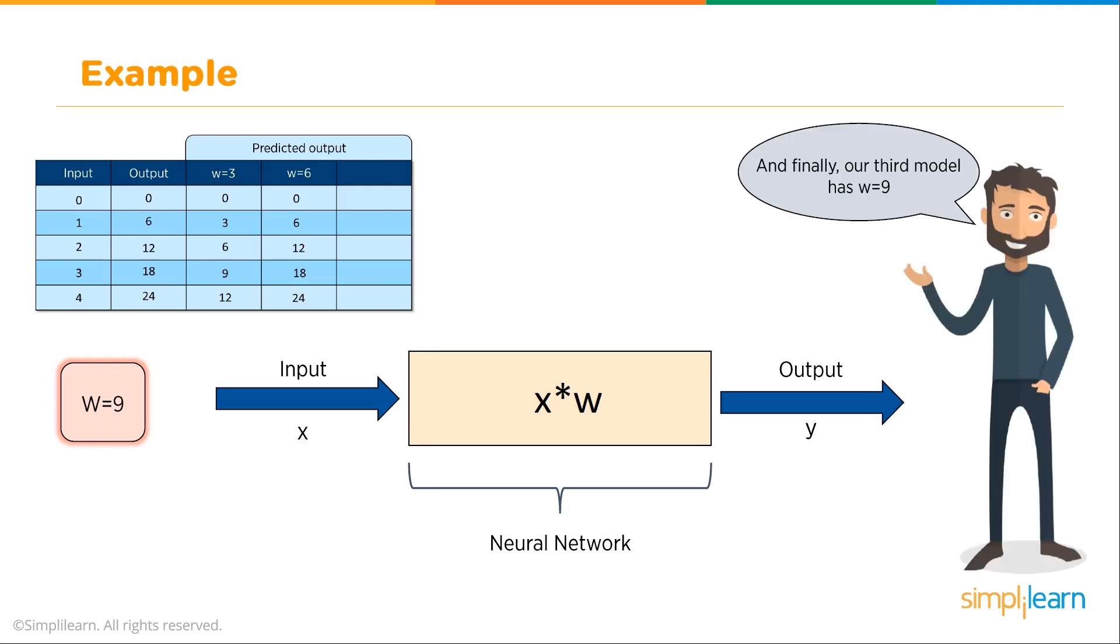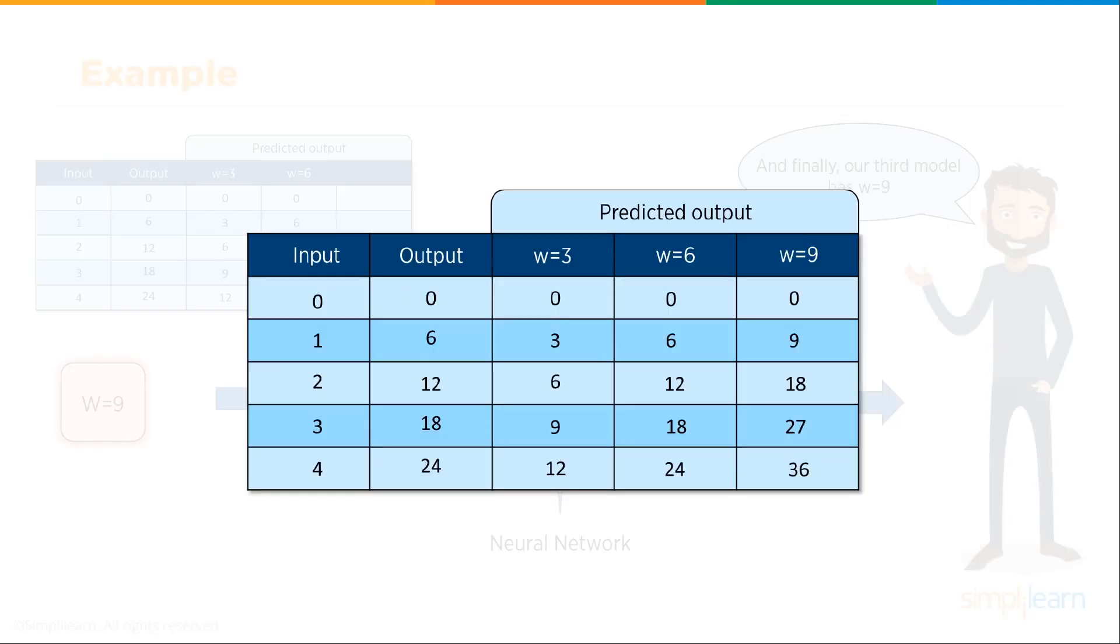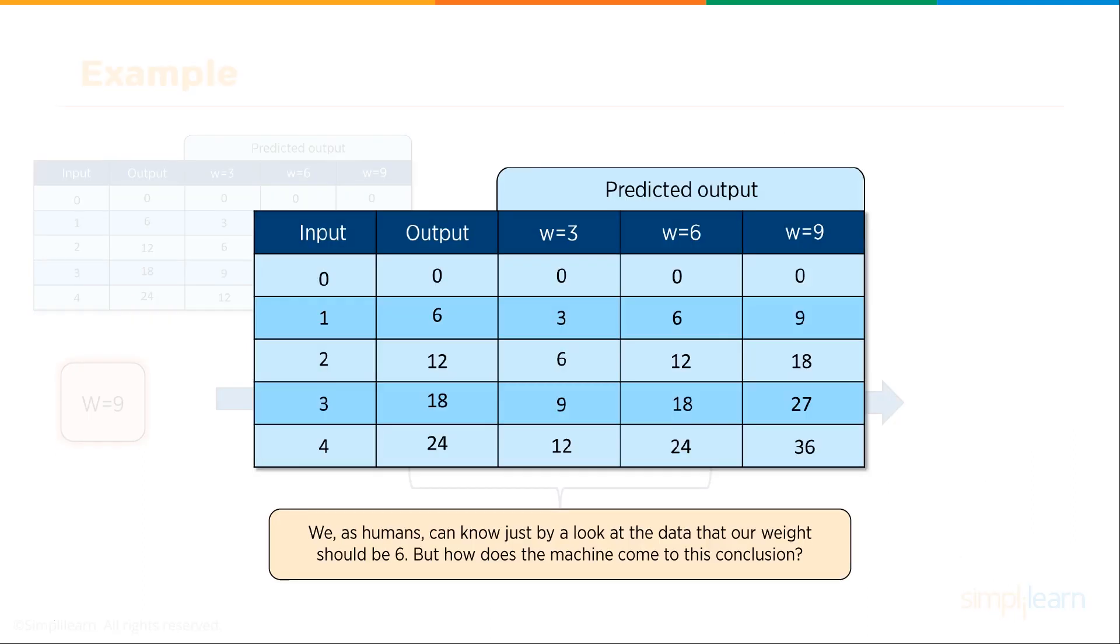We'll put in a third model where W equals 9. At this point this is one way of doing this, just to guess what W equals. You can see with W equals 9 we get the incorrect answers: 9, 18, 27, 36. We as humans can know just by taking a look at the data that our weight should be 6. But how does the machine come to this conclusion?